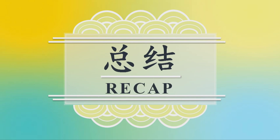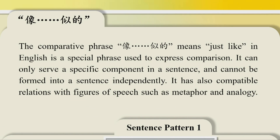总结：像似的。The comparative phrase 像似的 means just like in English, is a special phrase used to express comparison. It can only serve a specific component in a sentence and cannot be formed into a sentence independently. It has also compatible relations with figures of speech such as metaphor and analogy.